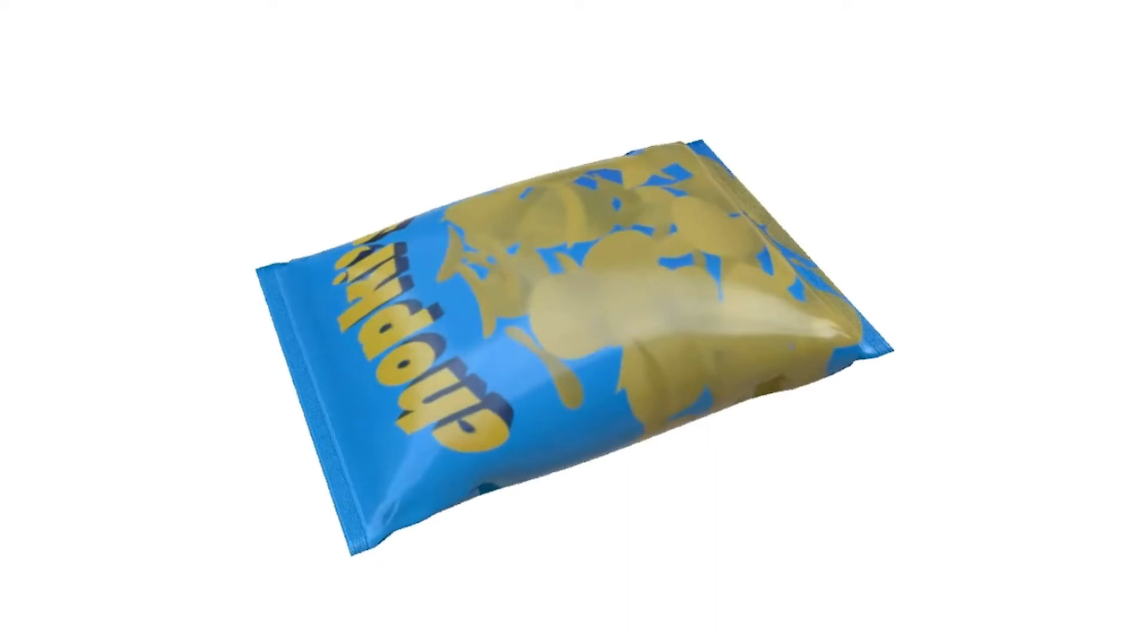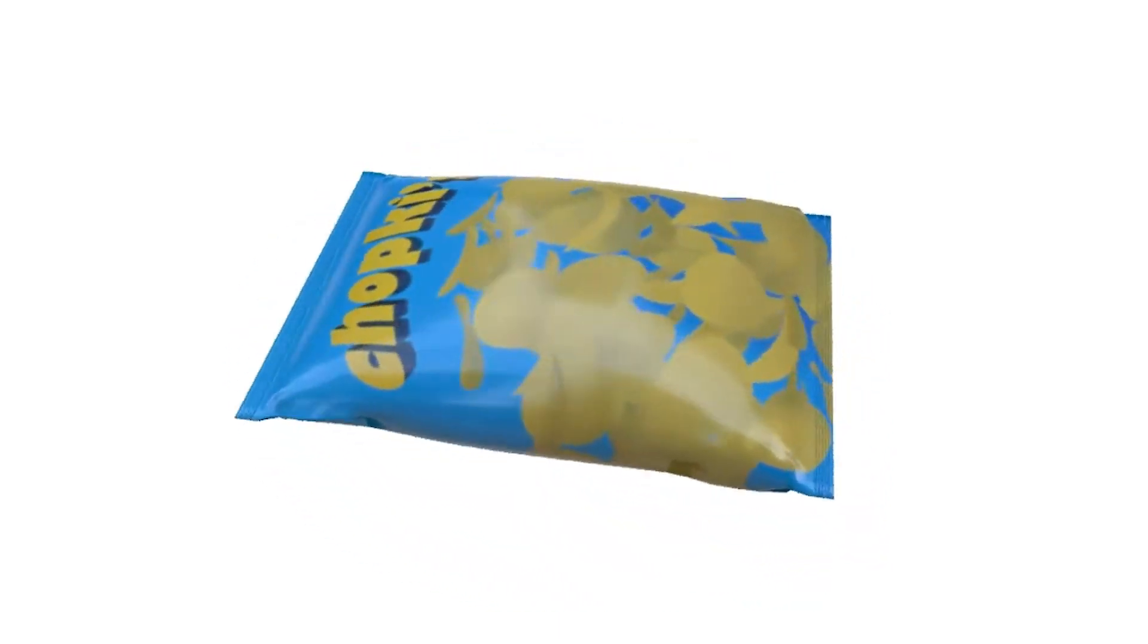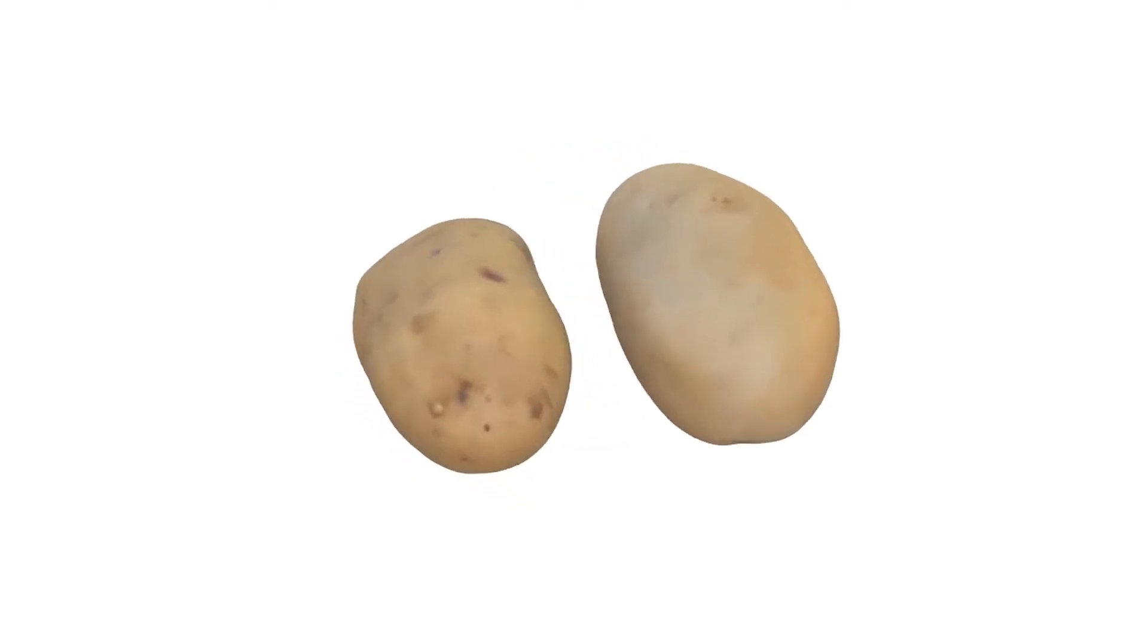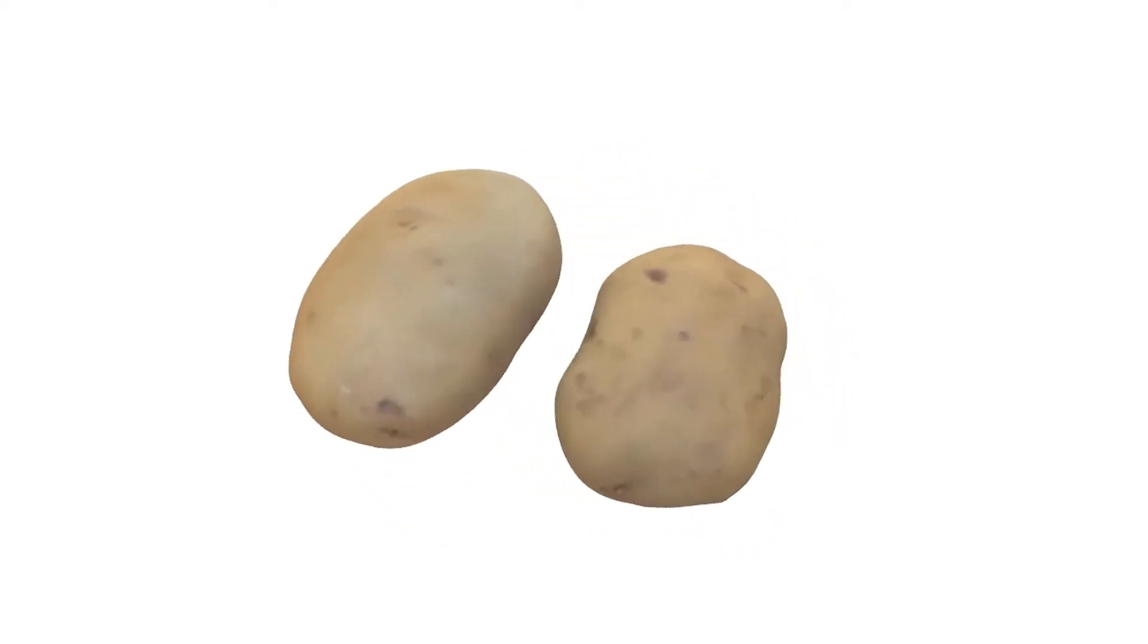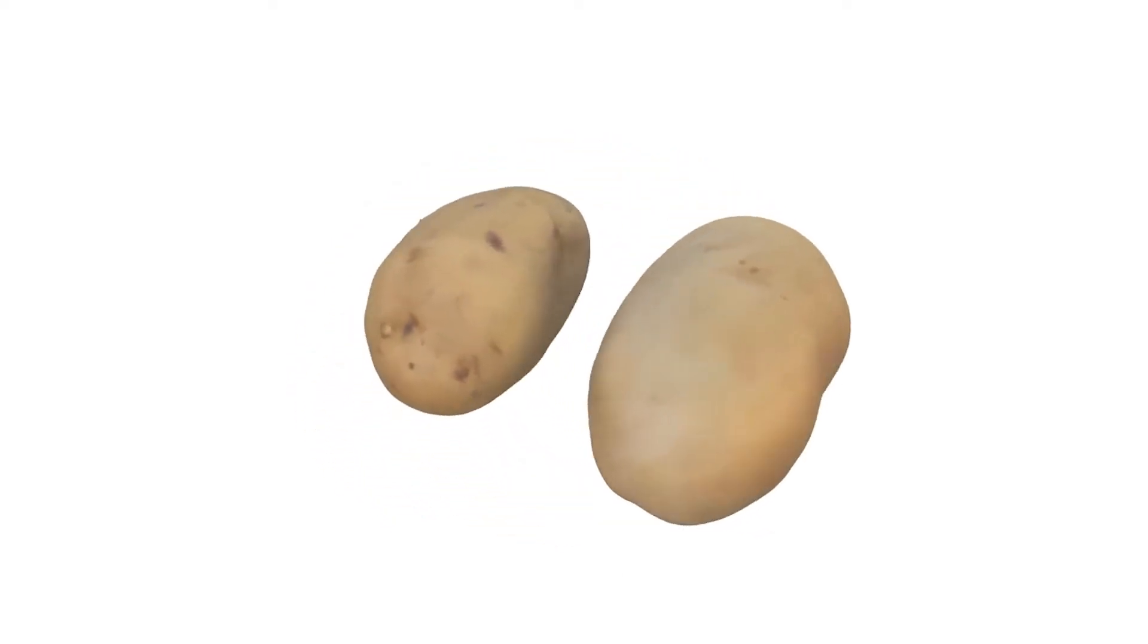This task is relatively easy to solve if the object is made of a shiny material which clearly reflects the environment, like this bag of potato chips. But it is significantly more difficult when the object is diffuse, like these potatoes, since such materials strongly blur the incoming light, making the problem ill-conditioned.